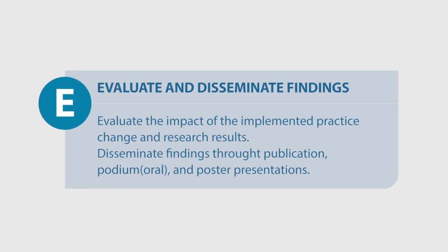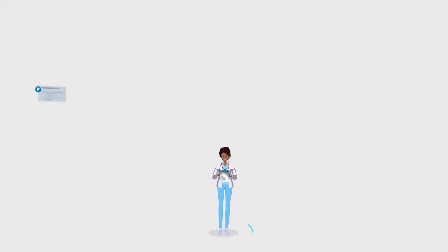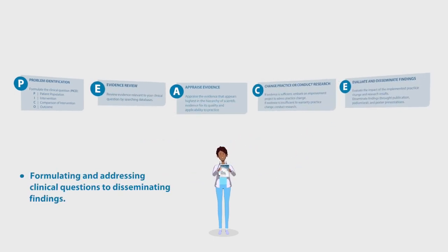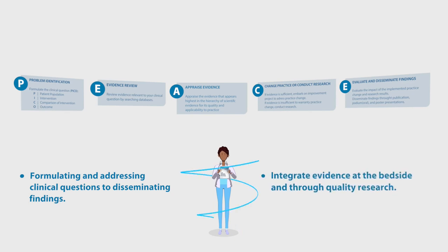The fifth step of the PEACE Model is to evaluate the impact of implemented practice change and research results, as well as disseminate findings through publication, podium, and poster presentations. You will learn from formulating and addressing clinical questions to disseminating findings, ultimately helping nurses integrate evidence at the bedside and through quality research.